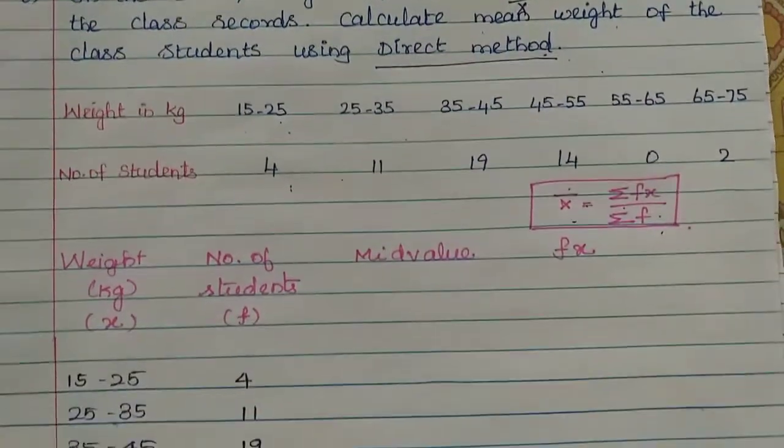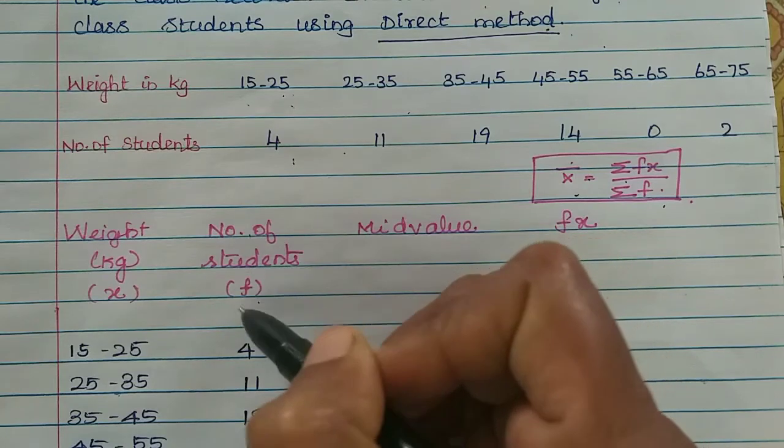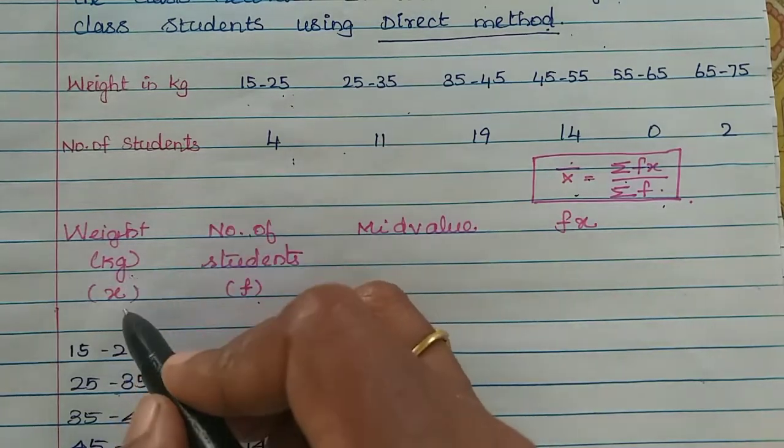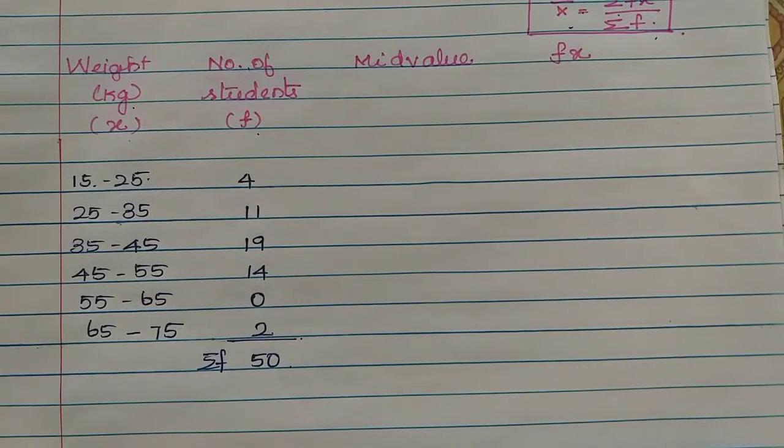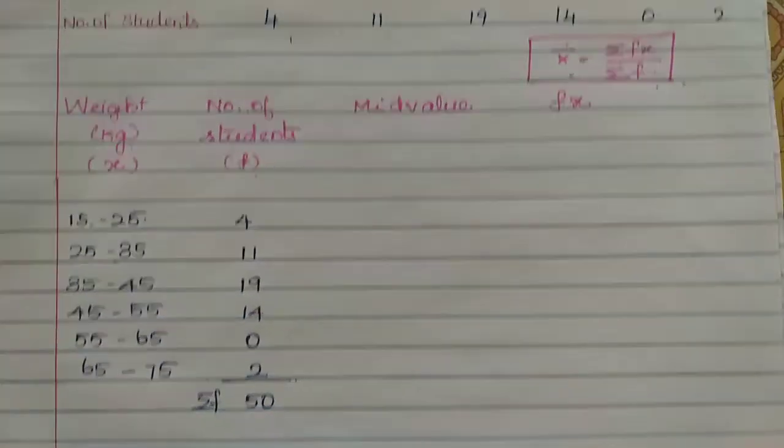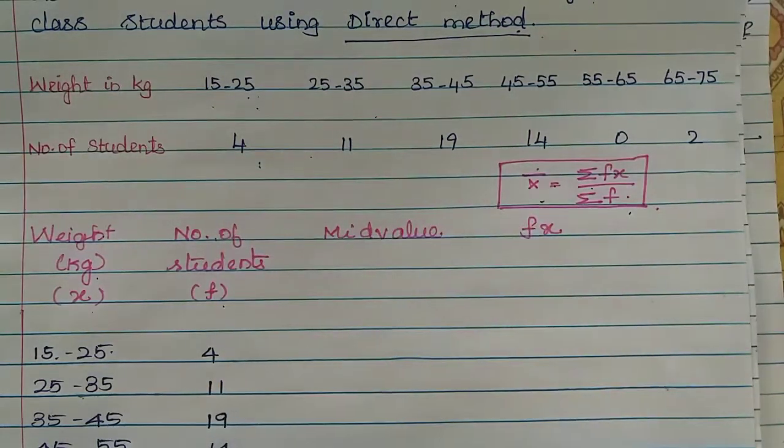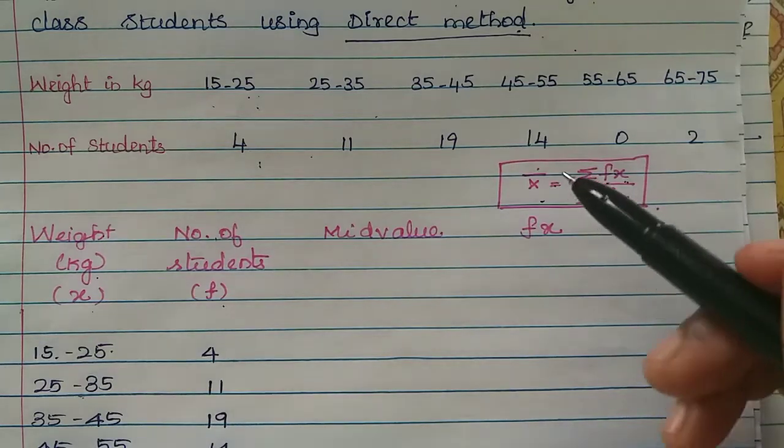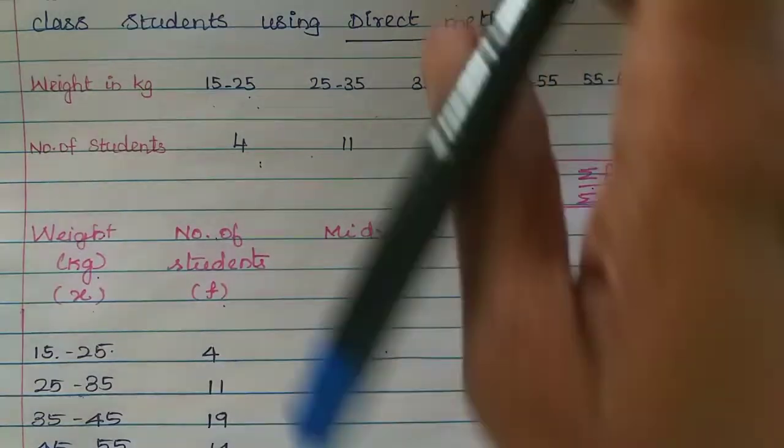Now weight is measured, then number of students. We will use the frequency f. Weight of students is 15 to 25, 25 to 35. We will use the class interval x value. The frequency add to sigma f, and f into x is fx. The value of the weight, we will use the mid value x.